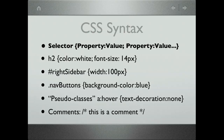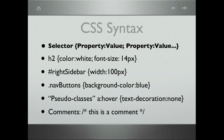A few examples of what selectors can be. The first is h2 — we specify a color and a font size. This grabs any h2 element on the page and sets its font color to white and font size to 14 pixels. Another common way is using an ID — for example, a div with id='right-sidebar'. We access that in CSS using the pound or hash symbol. So '#right-sidebar' says give me the element with an ID of right-sidebar and set its width to 100 pixels.